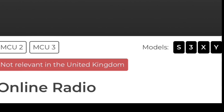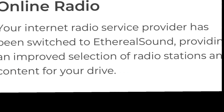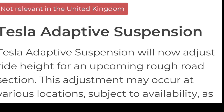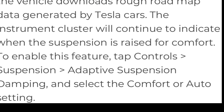For MCU2, MCU3, S, 3, X and Y — but not applicable in the UK — online radio: your internet radio service provider has been switched to Ethereal Sound, providing an improved selection of radio stations and content. Next, for the Raven Model S and Model X — not relevant in the UK — Tesla adaptive suspension will now adjust ride height for rough road situations. This adjustment may occur at various locations as the vehicle downloads rough road map data generated by Tesla cars. To enable, tap Controls > Suspension > Adaptive Suspension Damping and select Comfort or Auto.